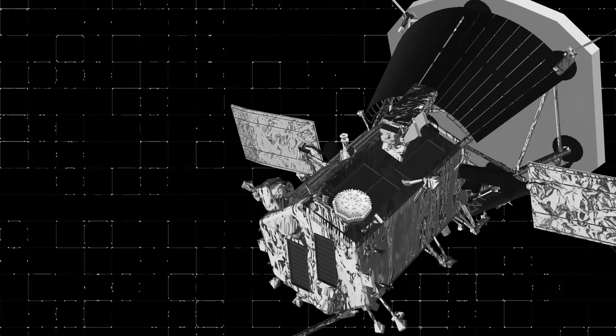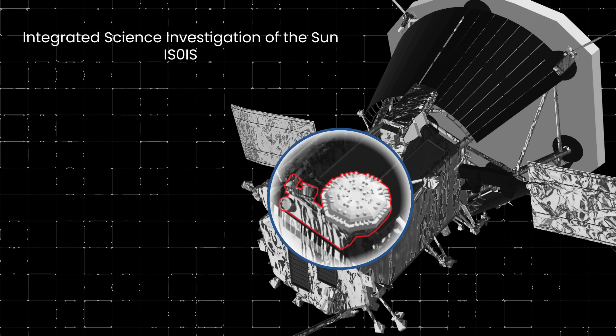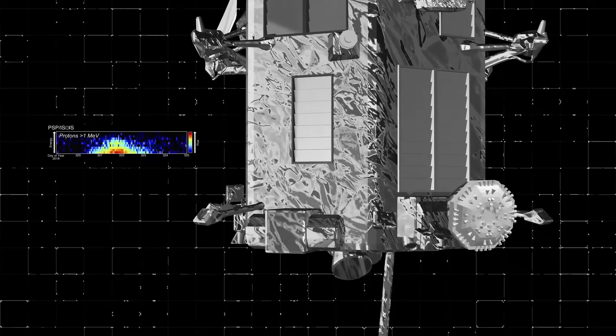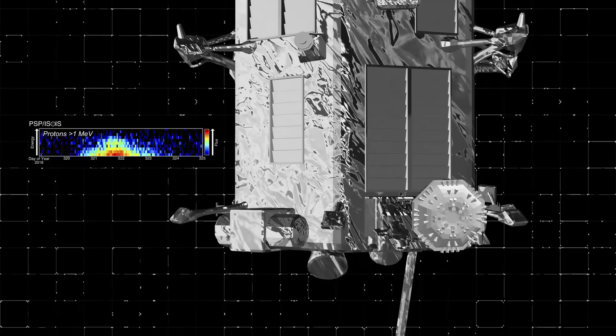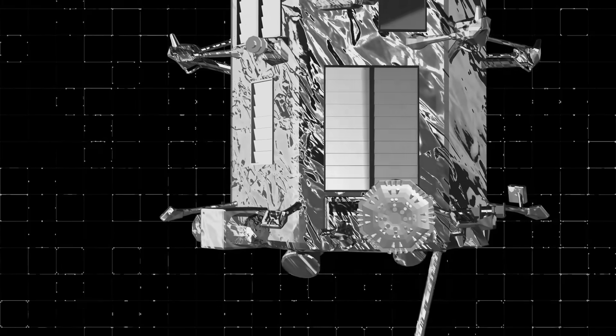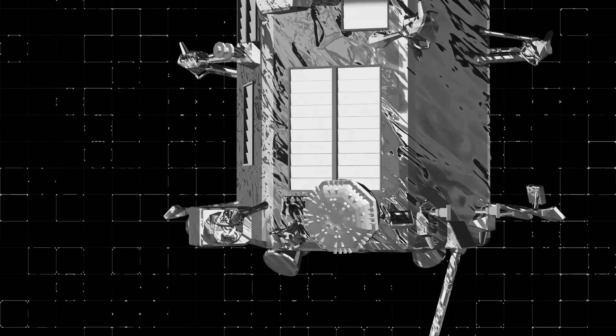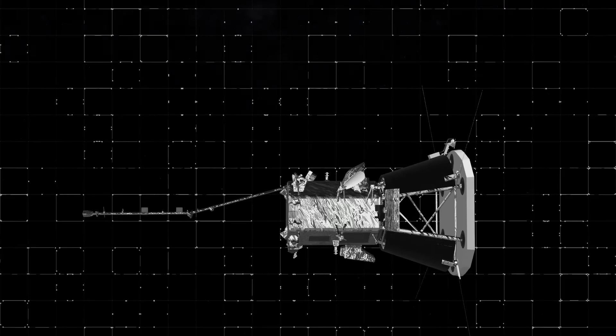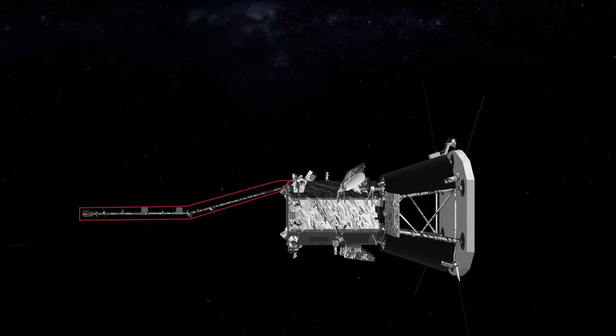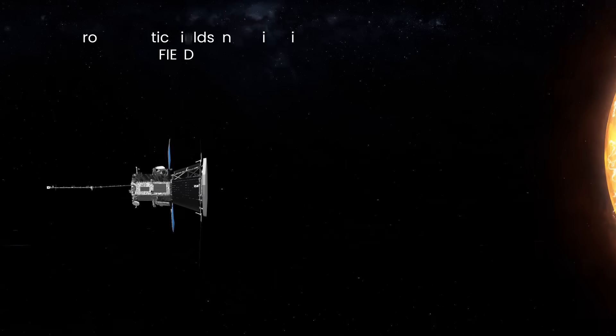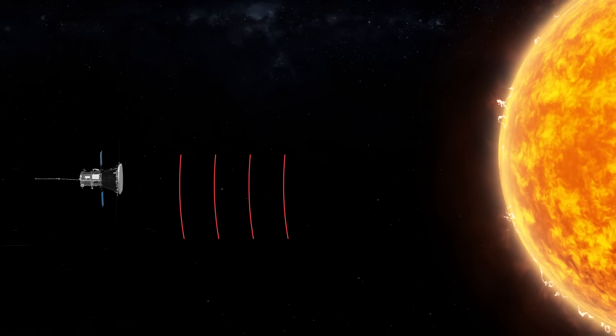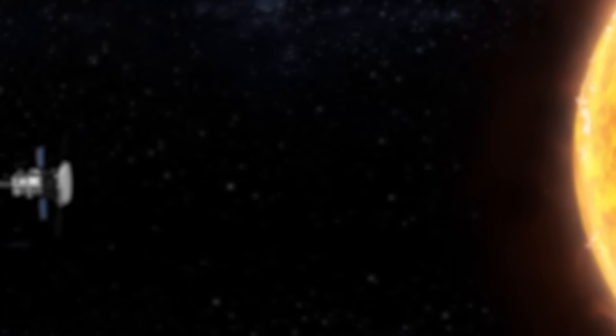Another tool that Parker is equipped with is called Integrated Science Investigation of the Sun. It's made of two separate instruments, each having a different energy range. The instrument can weigh highly energetic heavy ions, electrons, and protons moving through the sun's atmosphere. Lastly, made of magnetometers and electric field antennas, the Parker Solar Probe will use Electromagnetic Fields Investigation Tool to analyze magnetic fields, radio emissions, and density of the sun's corona.